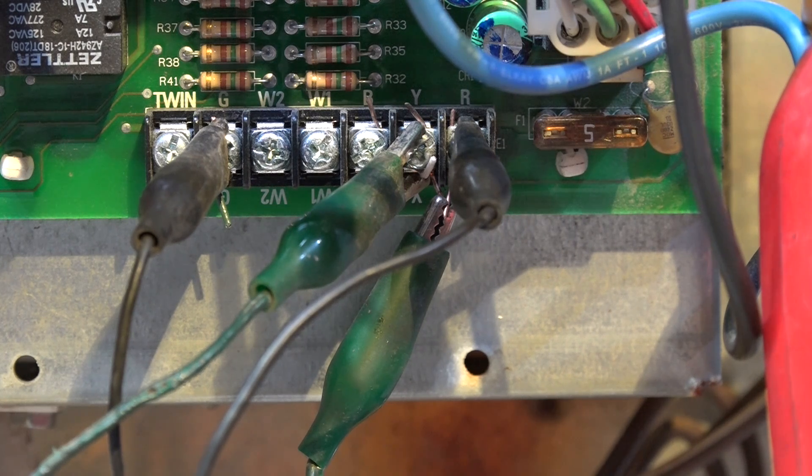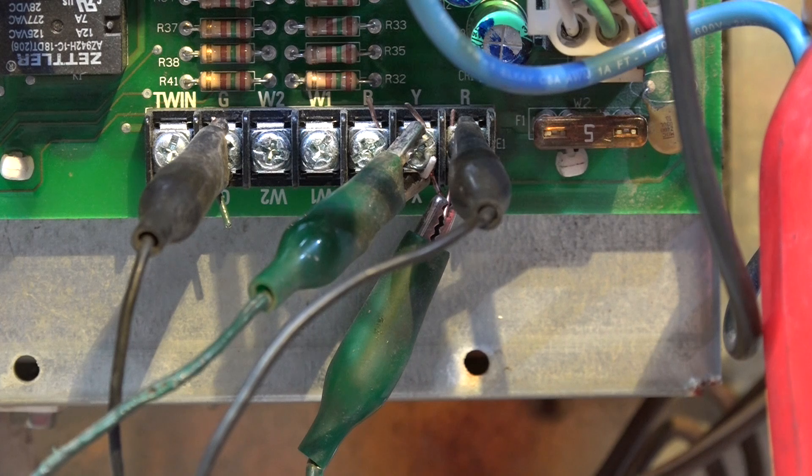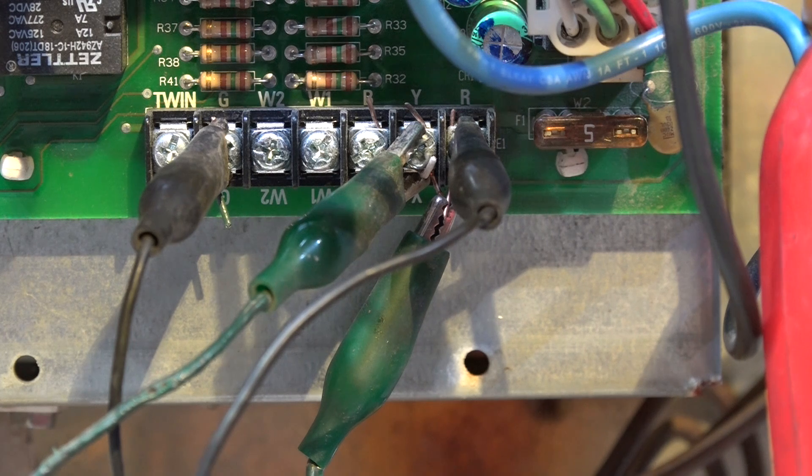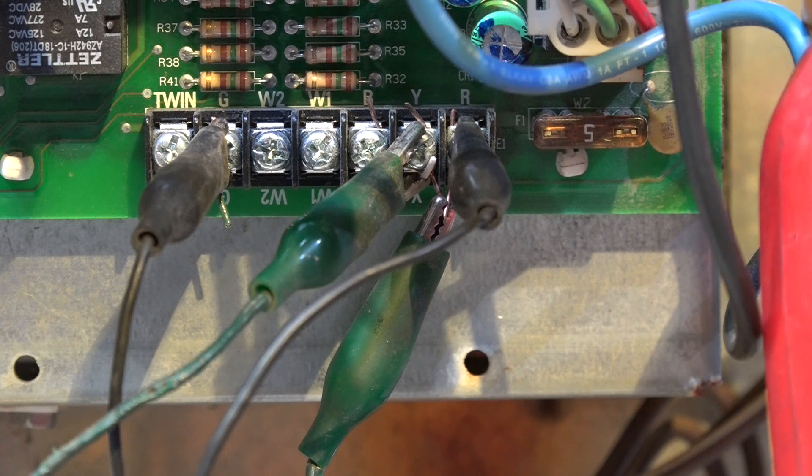So when you're working with an air conditioner and an integrated furnace control, you need to hook up the Y to the terminals on the board. They're not just a place to pull wires—they actually signal the board what's going on. Okay, hope that one helps.